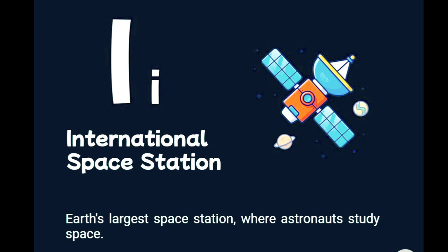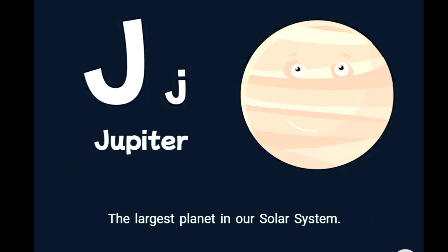I is for international space station, Earth's largest space station, where astronauts study space. J is for Jupiter, the largest planet in our solar system.